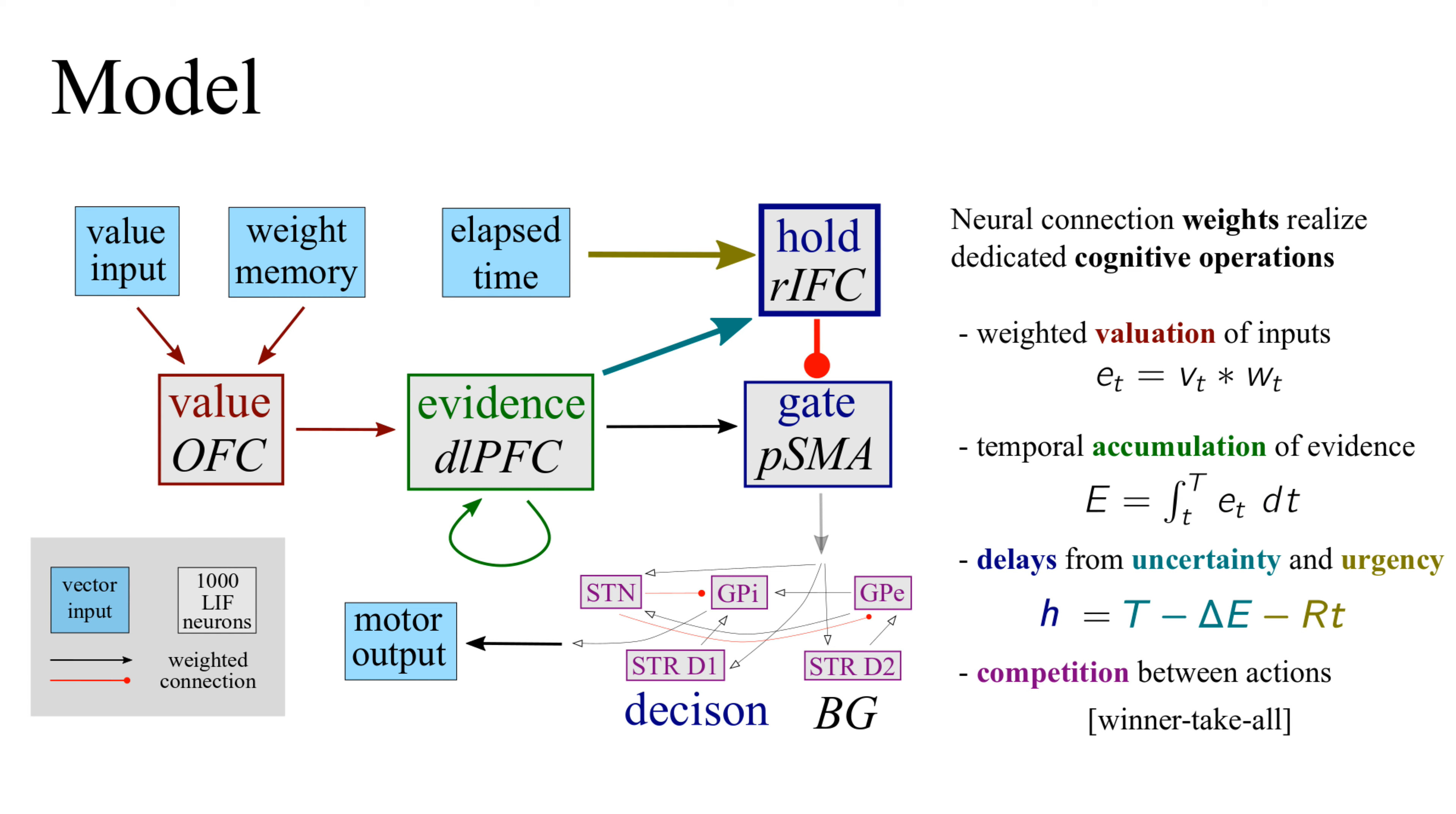The hold population monitors uncertainty and urgency, which are estimated from the current evidence and the elapsed time. When a dynamic threshold is crossed, hold releases inhibition on the gate population, and information flows from evidence through gate to the decision population. Winner-take-all competition within the decision network then selects the option with the greatest evidence and outputs the result.